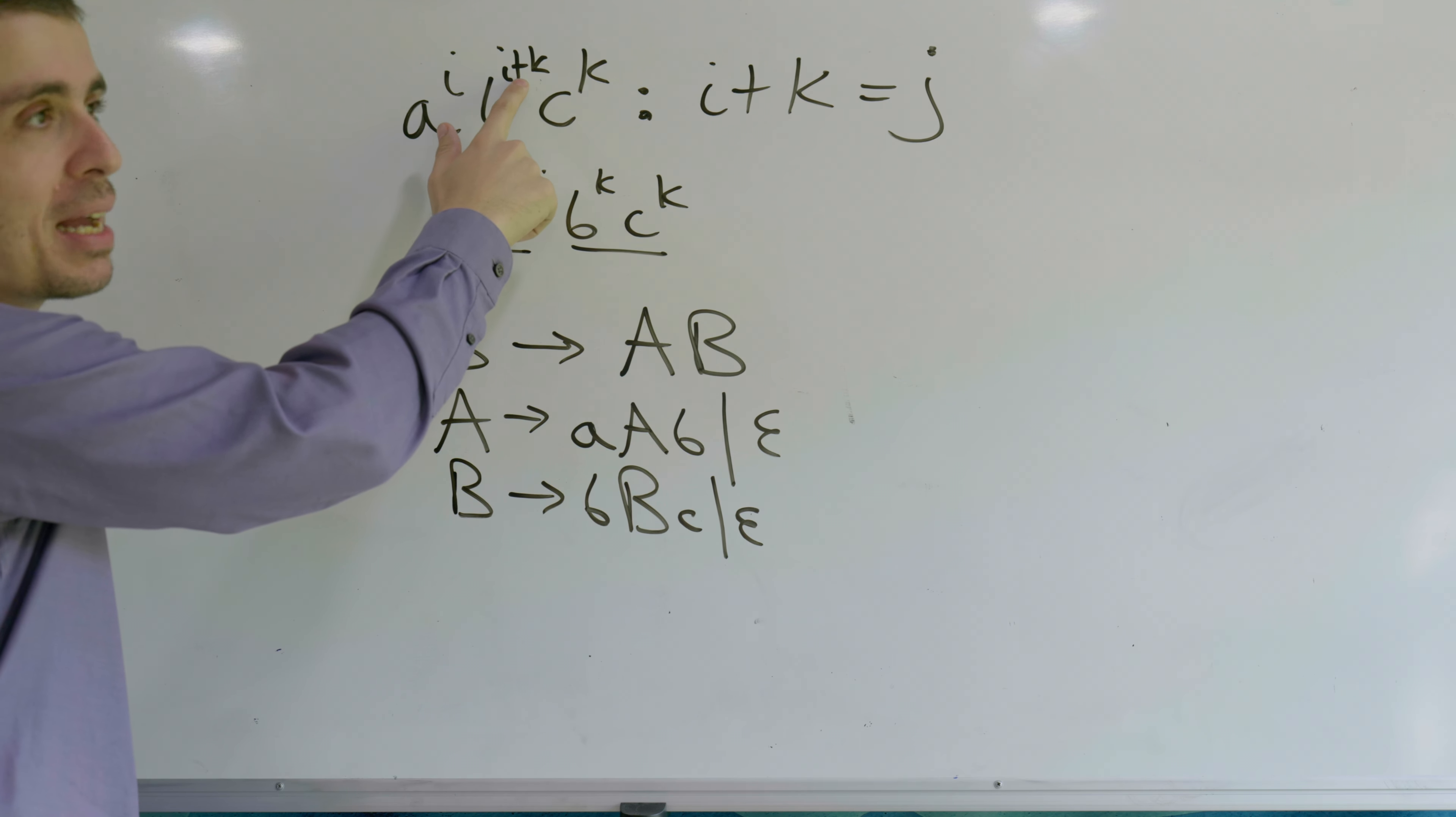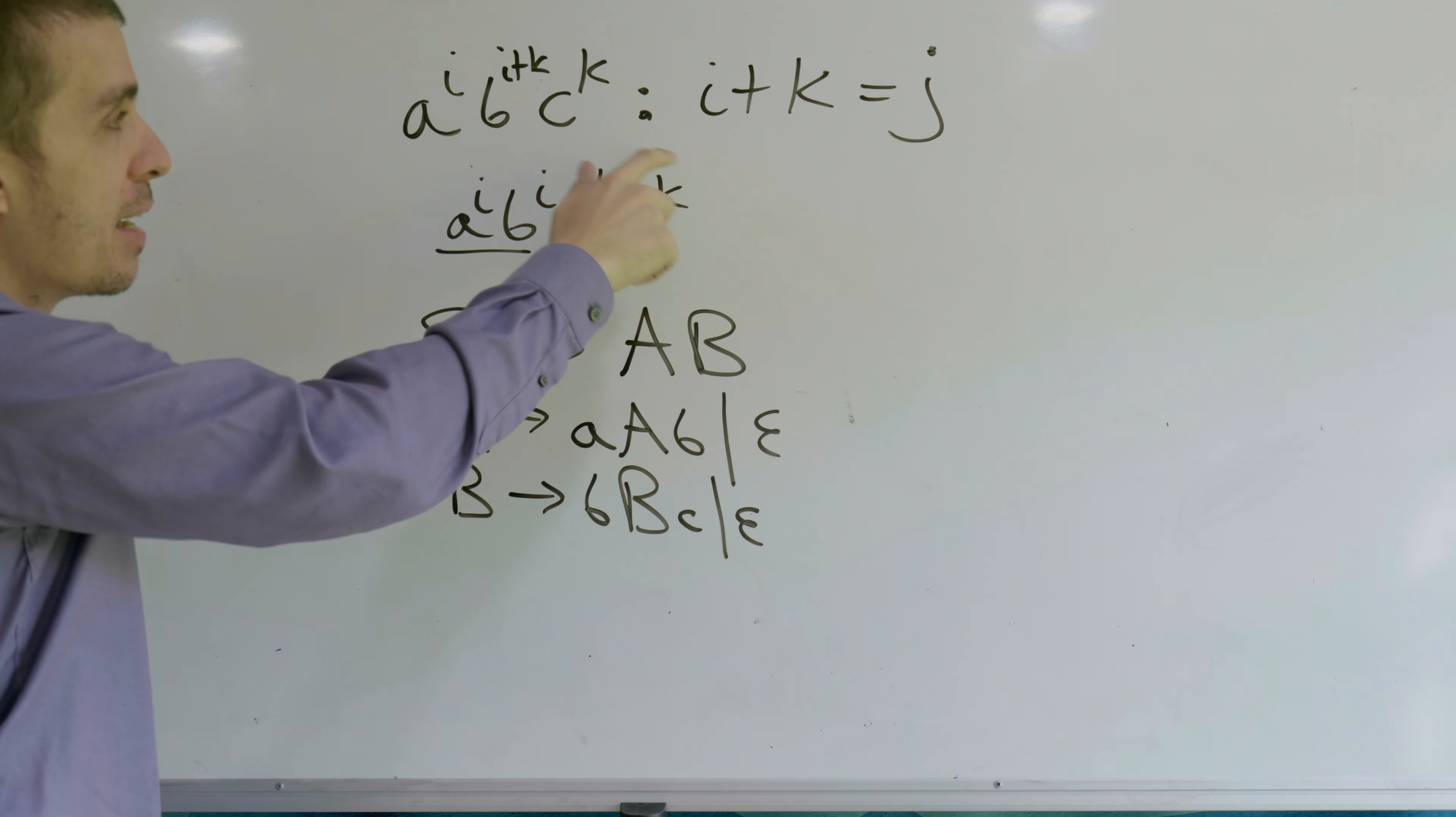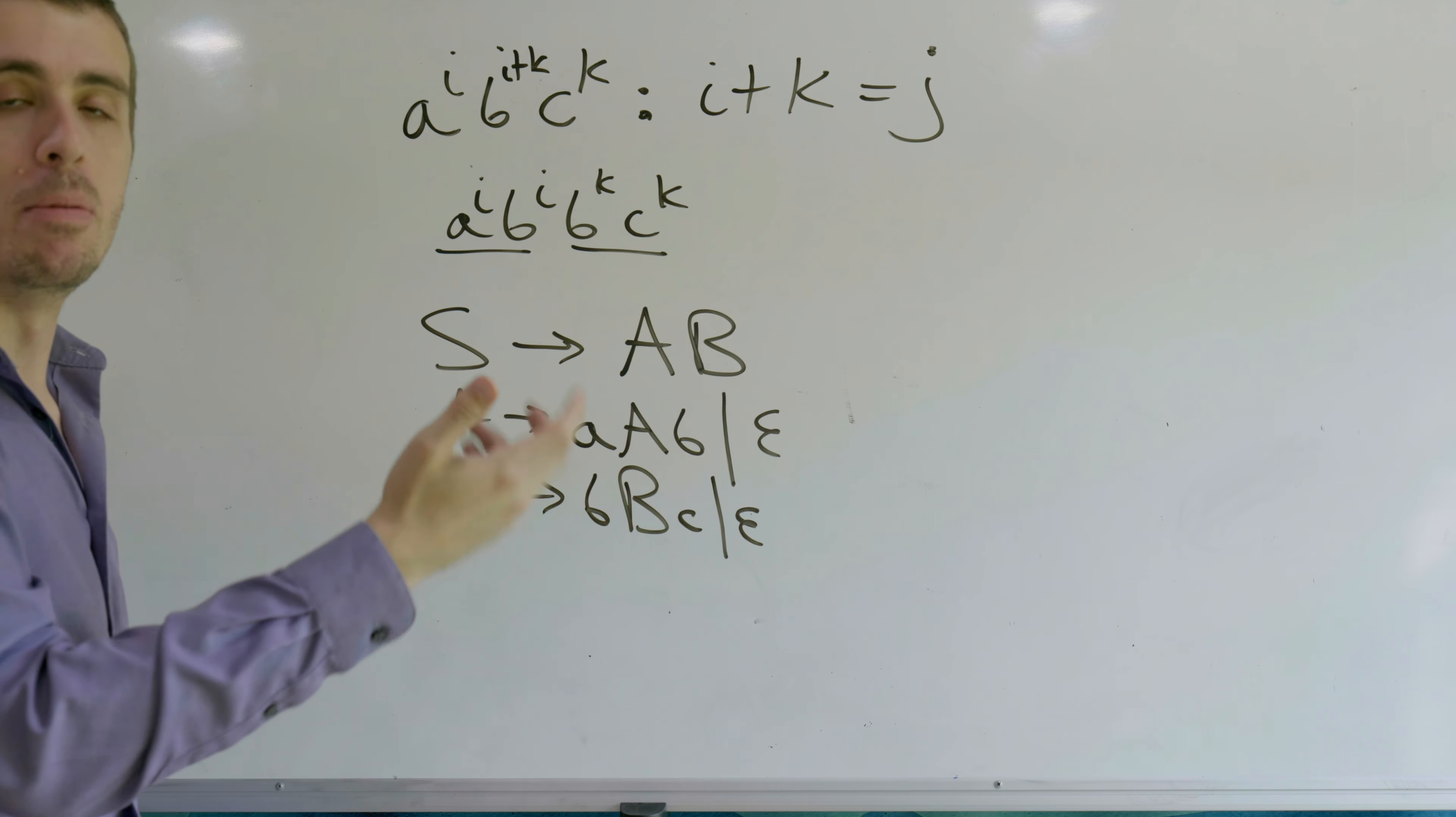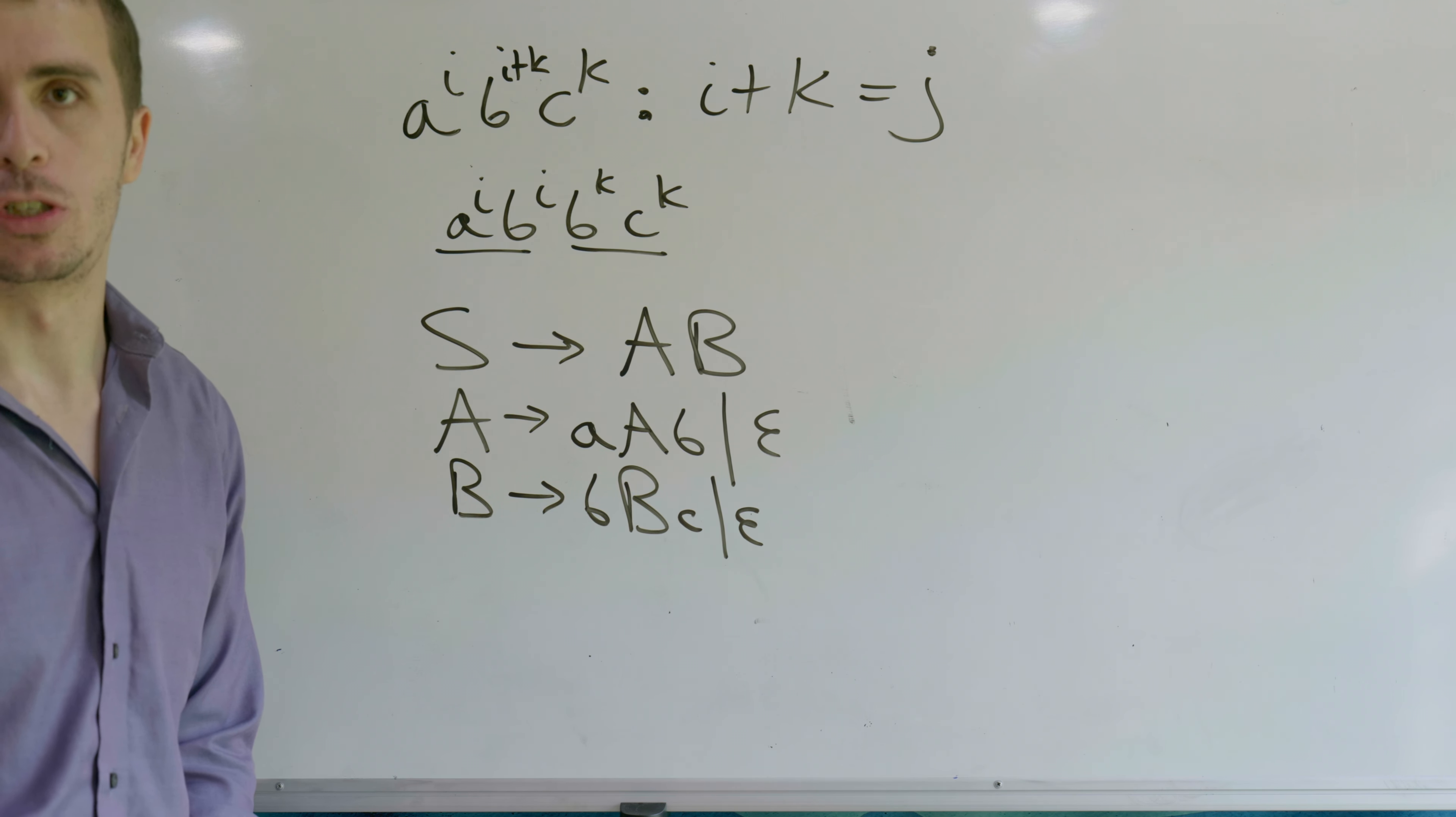b^(i+k) c^k, and if this was j, it would be that i plus k is equal to j. Here we go.